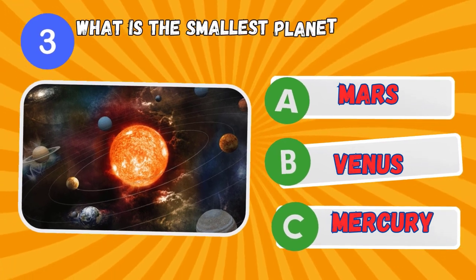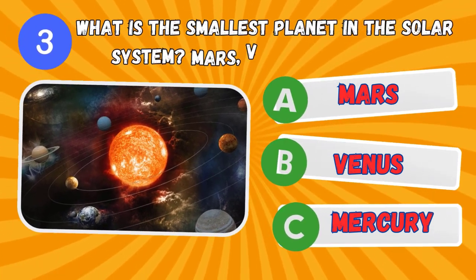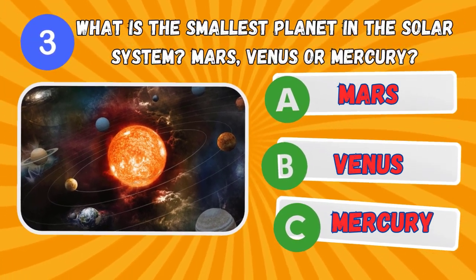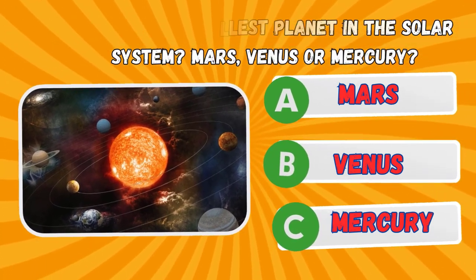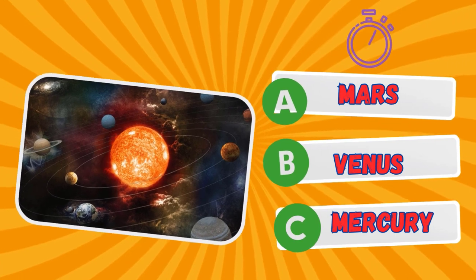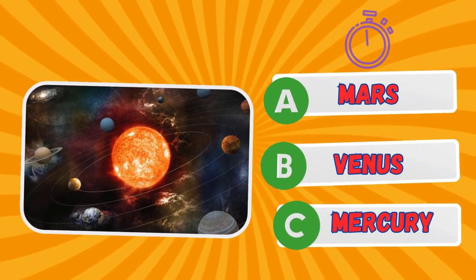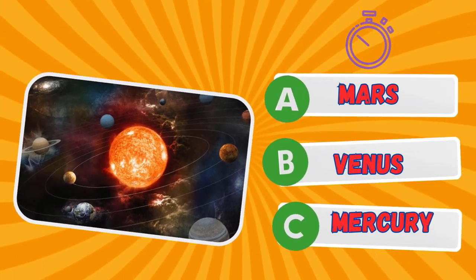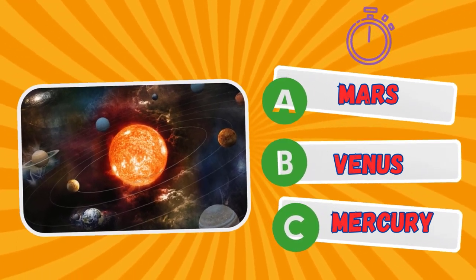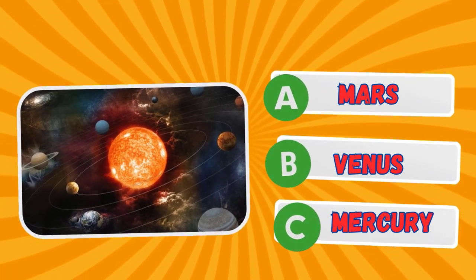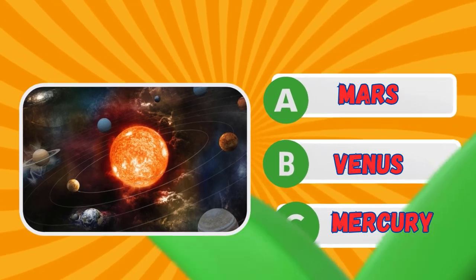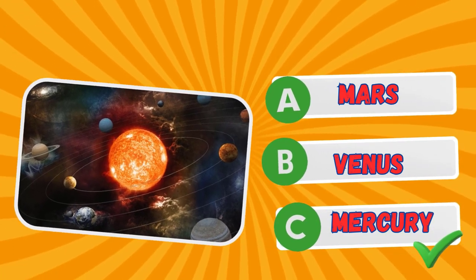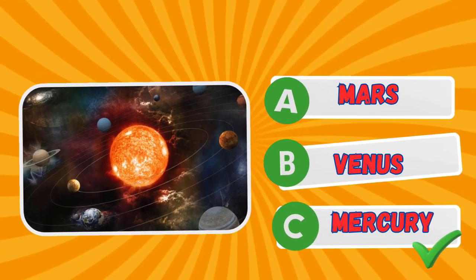What is the smallest planet in the solar system? Mars, Venus, or Mercury? Did you guess? Mercury!